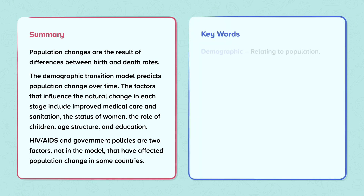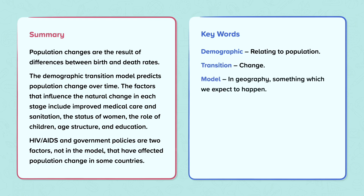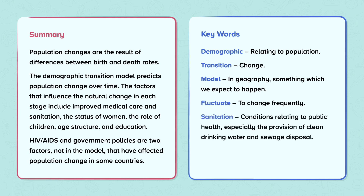Keywords: Demographic — relating to population. Transition — change. Model — in geography, something which we expect to happen. Fluctuate — to change frequently. Sanitation — conditions relating to public health, especially the provision of clean drinking water and sewage disposal. HIV AIDS — a virus that weakens the body's immune system.